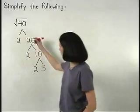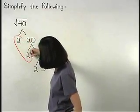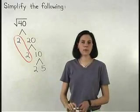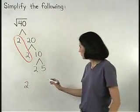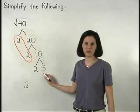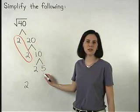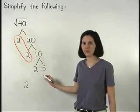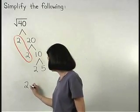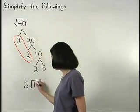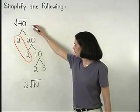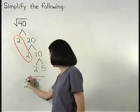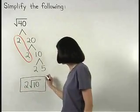So we have a pair of 2's, which means that a 2 can come out of the radical, and we have a 2 and a 5 that don't pair up, which means that a 2 and a 5 stay inside the radical, multiplying together to make 10. So the square root of 40 simplifies to 2 root 10.